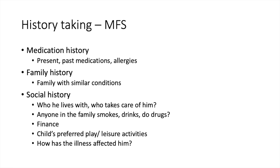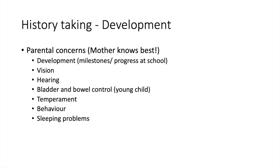How has the illness affected the child? The last section is Development — mother knows best, so ask the mother if there is anything she has noticed that concerns her. Arranged from head to toe: brain development can be assessed by developmental milestones — what age they started walking or talking, and how their progress is at school. Then any visual or hearing problems, bladder or bowel control problems especially in young children, and then temperament, behaviour, and sleeping problems.